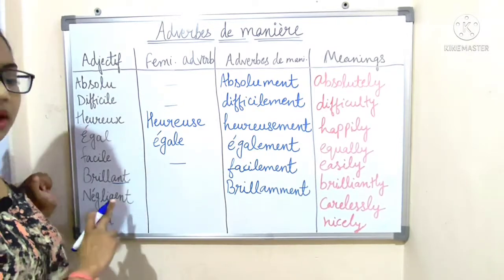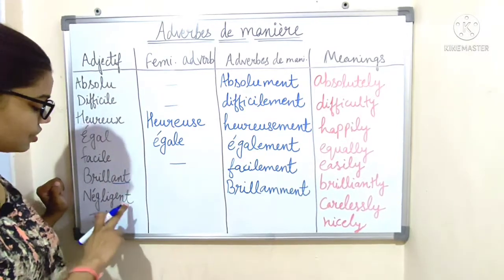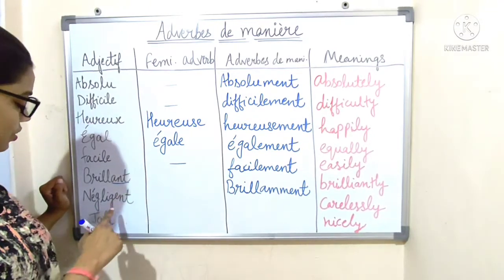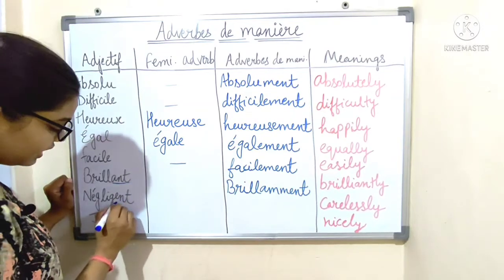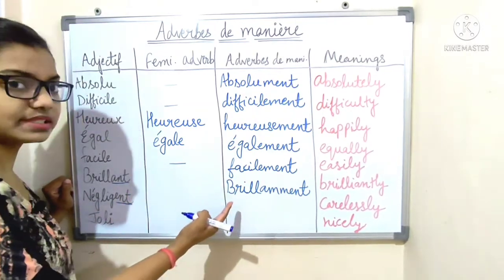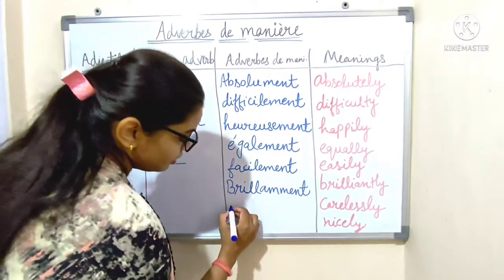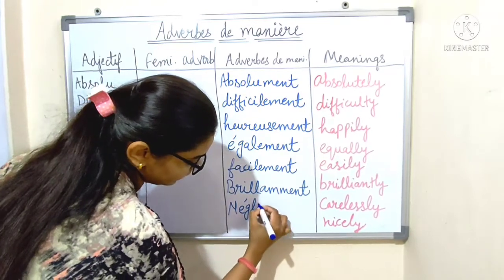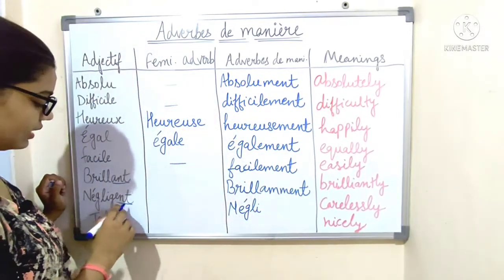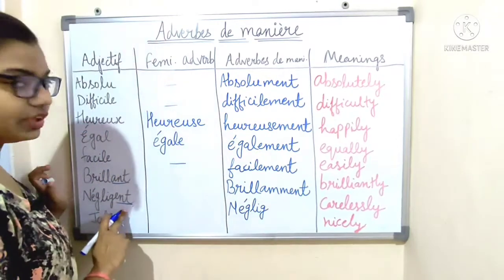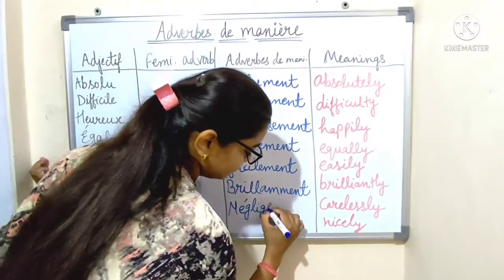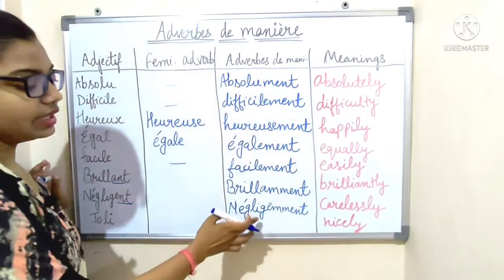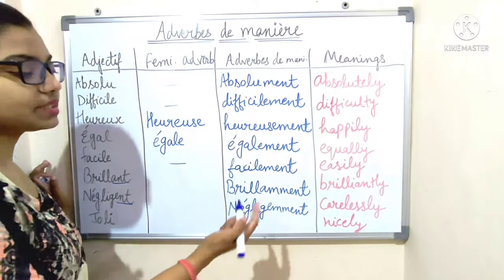Next: 'négligent', which means 'carelessly'. It ends with E-N-T, so we remove '-ent' and add '-emment': N-É-G-L-I-G-E-M-M-E-N-T — 'négligemment', which means 'carelessly'.